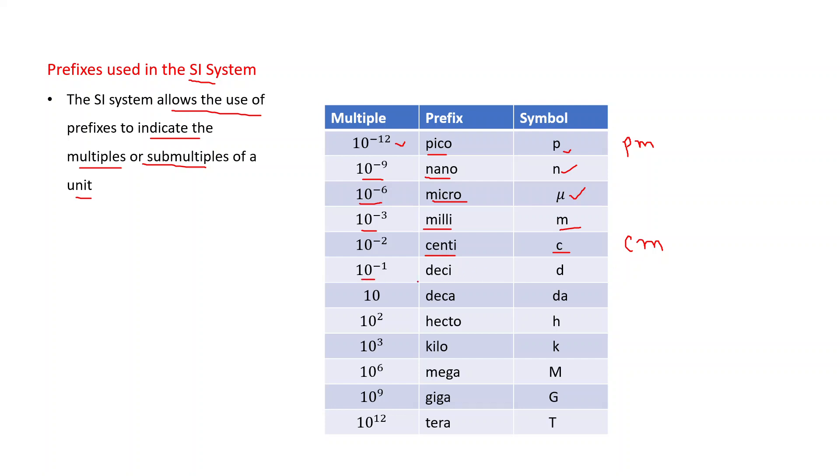10 to the power minus 1, this is deci, d. 10, this is deca. Hecto, 10 to the power 2, h. Kilo, 10 to the power 3. One base SI unit, that is SI unit of mass, already have one prefix, kilogram.